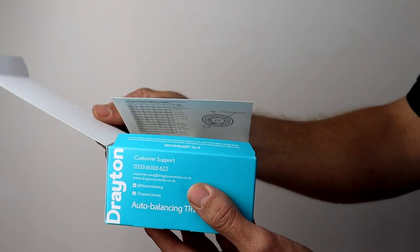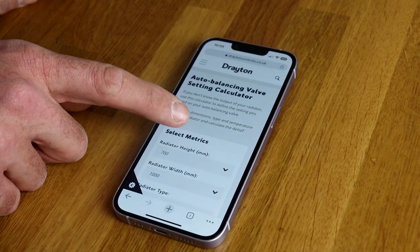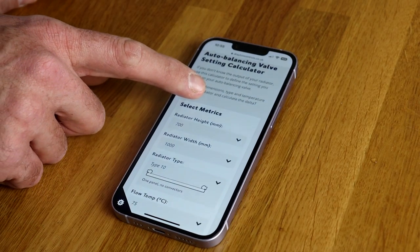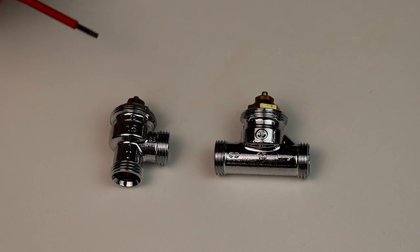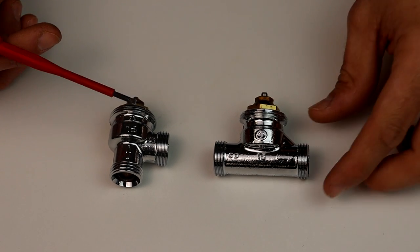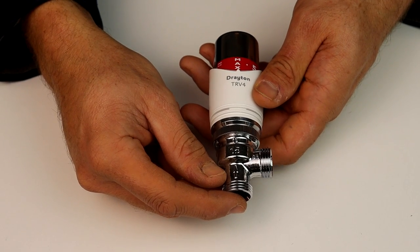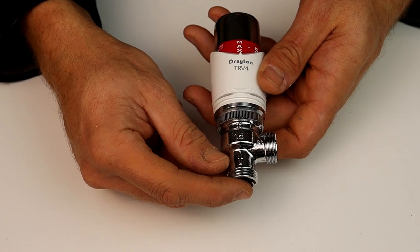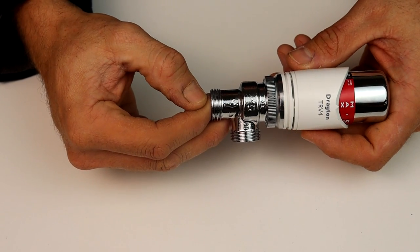This can be established from the data on the box if the radiator output is known, or for retrofitting we have an online calculator which uses the radiator size and type to identify the flow rate. These valve bodies are unidirectional, so you need to observe and follow the flow direction arrow when fitting. They can be fitted on either the flow or return. However, if the angled body is fitted on the return side, the sensing head will need to sit horizontally to respect the flow direction.